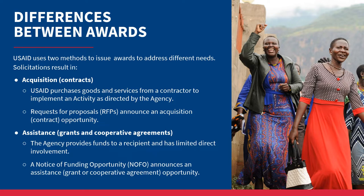Awards in both categories must follow the U.S. government Code of Federal Regulations. Contracts are guided by the Federal Acquisition Regulations, or FAR. 2 CFR, which is Title II of the Code of Federal Regulations, is where you can find U.S. government rules on grants and agreements.